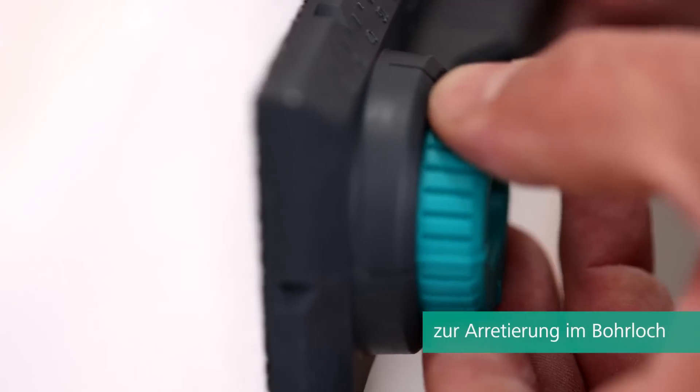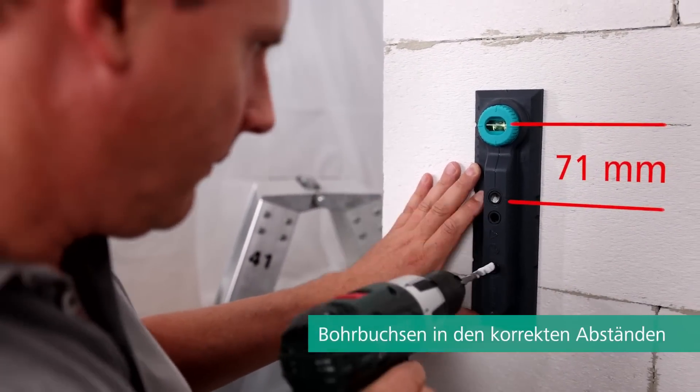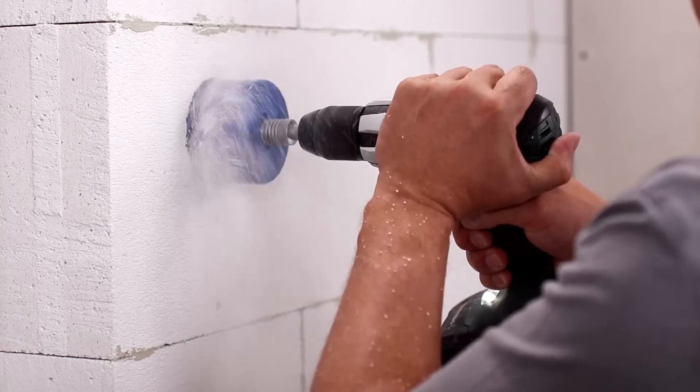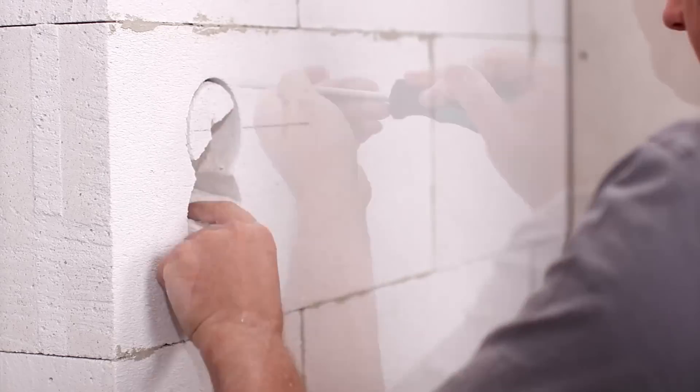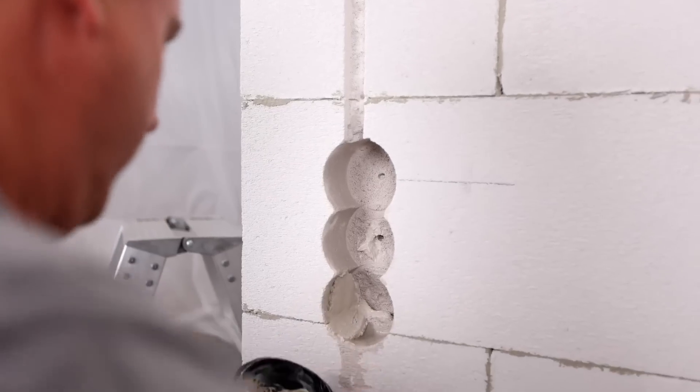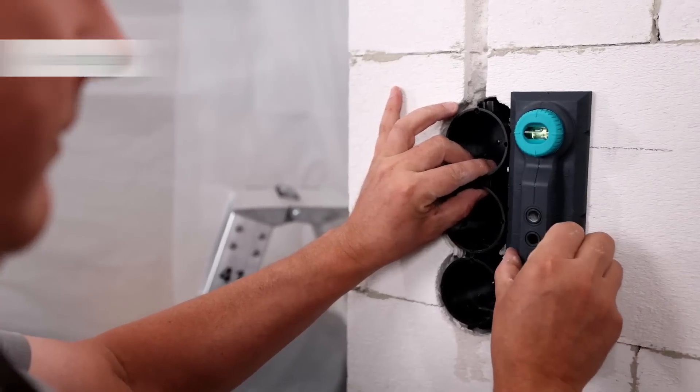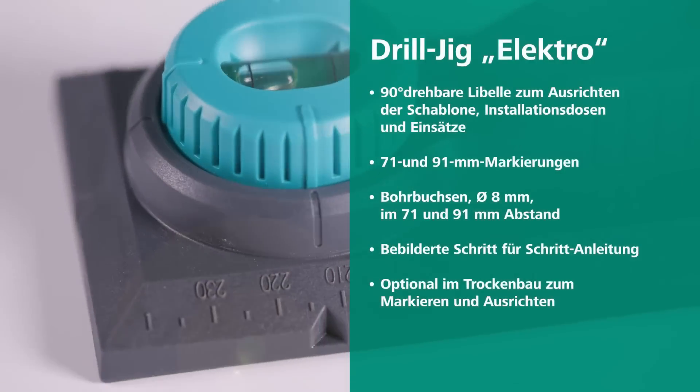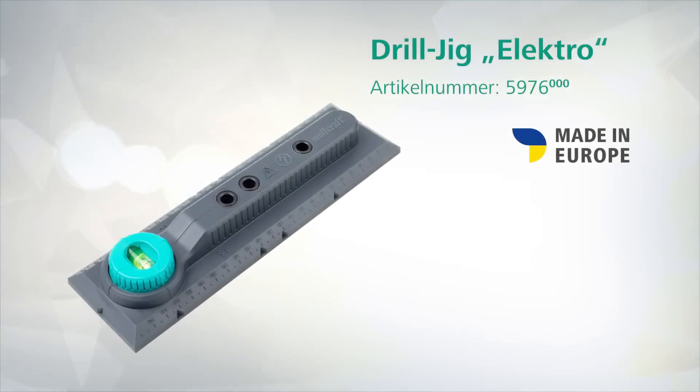With a 90-degree rotatable level, the drill jig electrics can be reliably aligned vertically and horizontally for accurate marking of the drilling position. This tool saves time by providing a reliable position for drilling without the need for marking and measuring. Say goodbye to the hassle and frustration of traditional installation methods, and hello to the ease and convenience of the drill jig electrics.